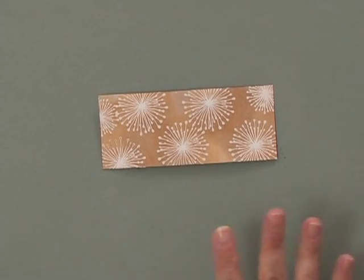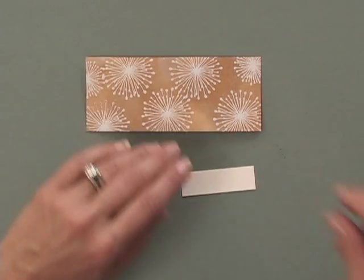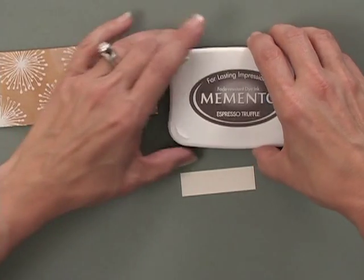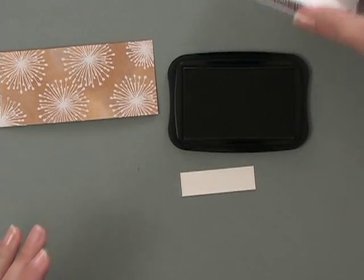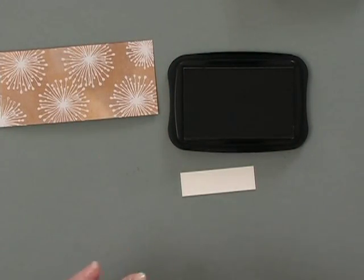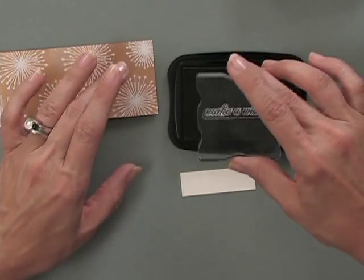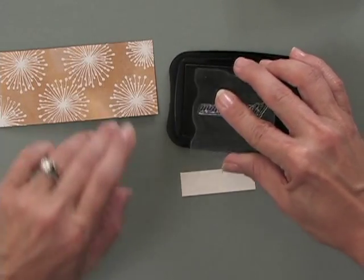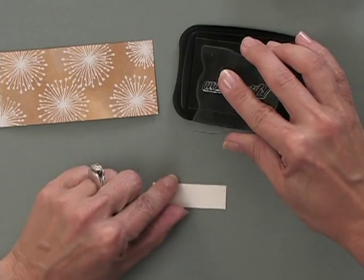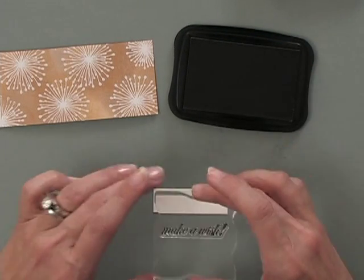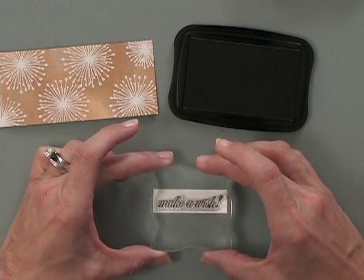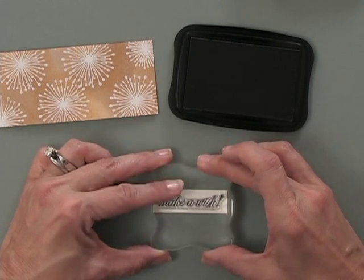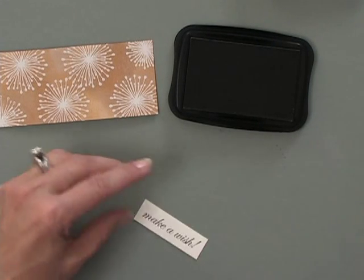So let's go back to this side and I'll wipe off any powder that was on there. Now I'm going to assemble my card, but I am going to stamp a greeting. I'm going to use some of this Espresso Truffle ink. Since these are dandelions, kind of the skeletons of dandelions, I'm going to use the Make-A-Wish greeting from the new Sunkissed Autumn Stamp TV Kit. So stamp that right about there.